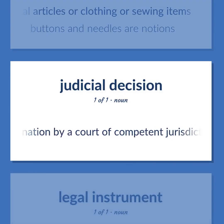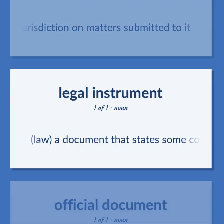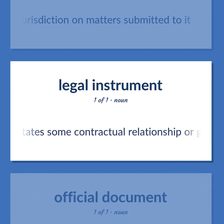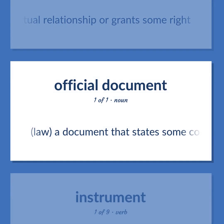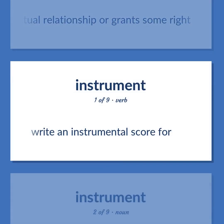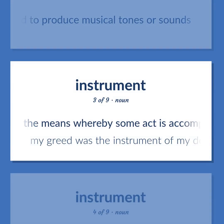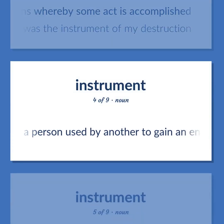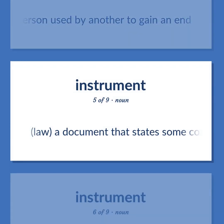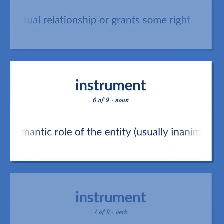'Instrument' (Law): The determination by a court of competent jurisdiction on matters submitted to it. A document that states some contractual relationship or grants some right. To write an instrumental score for something. Any of various devices or contrivances used to produce musical tones or sounds. The means whereby some act is accomplished — 'My greed was the instrument of my destruction.' A person used by another to gain an end. The semantic role of an entity, usually inanimate, that an agent uses to perform an action or start a process.